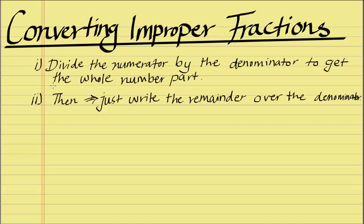There are two steps involved. I've written them down here, so you simply divide the numerator by the denominator to get the whole number part. That's the first step. We then simply write the remainder over the denominator, and that will give us the fraction part.